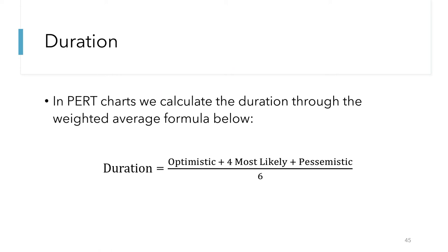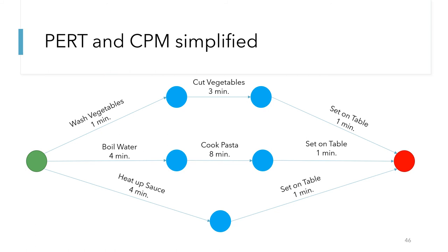To help illustrate PERT and the Critical Path Method, let's think of a simple scenario where you wanted to make dinner. You can see from this diagram how each task is related to one another and what the process flows are. On the top you're making a salad, in the middle you're making pasta, and on the bottom you're heating up some sauce. The critical path here is the middle row — from boiling water to cooking the pasta and setting it on the table — because you can finish making a salad and heating up sauce early, but you can't have a full dinner without the pasta.